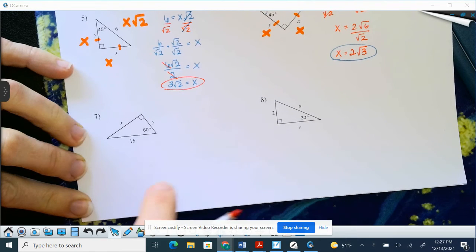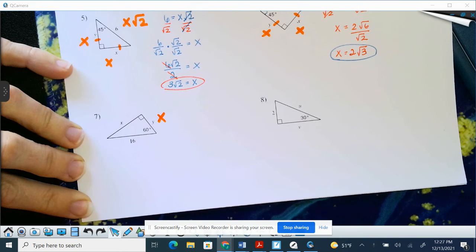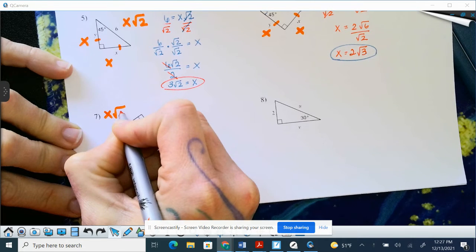So from 90, this is always going to be a value of X - that's your base value. Your hypotenuse is always 2X, and then the other side is X square root of 3.